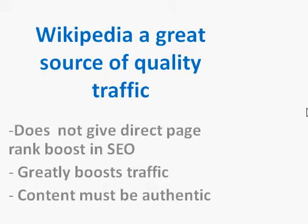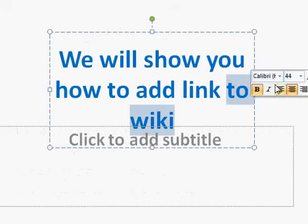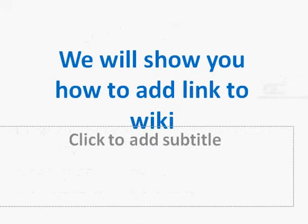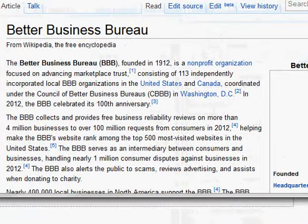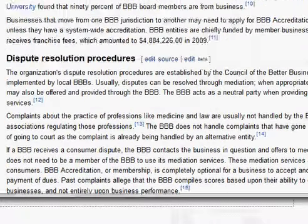There are a few things you need to worry about. First, your content must be authentic — it must provide some original source of information, or be very helpful by adding what is not covered in the Wikipedia article or other places. Or it should be the source from which Wikipedia has derived its information. Only then will the link stay; otherwise, more authentic users with higher standing can remove your link.